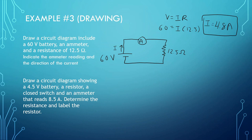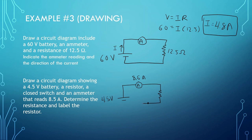Now it says draw a circuit diagram showing a 4.5-volt battery, a resistor, a closed switch, and an ammeter that reads 8.5 amps, and determine the resistance. So I'm going to draw a battery — 4.5 volts, this is the positive side. Now we're going to have an ammeter showing 8.5 amps, and there's a resistor, and they want a closed switch. So I'm just going to draw the closed switch like this.